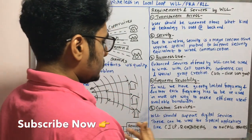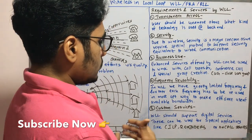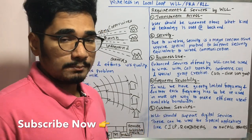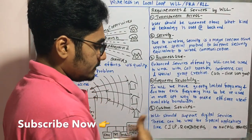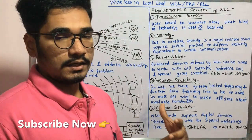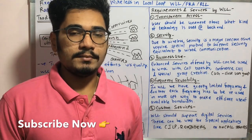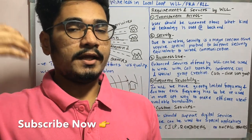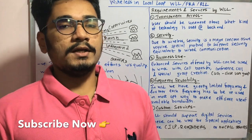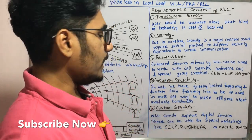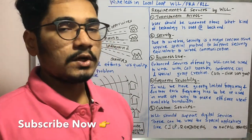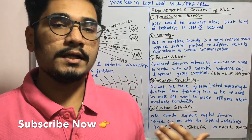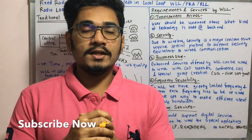Next we have custom services — user-specific services. WLL should support digital services, including special applications like CLIP. Then there are reminders for when a user needs to call back at a later time — similar to call notifications on iOS. That kind of facility is given in WLL. Also, on-call services including call recording and call diverting functionalities are all provided in WLL. That was all regarding WLL in wireless technology.